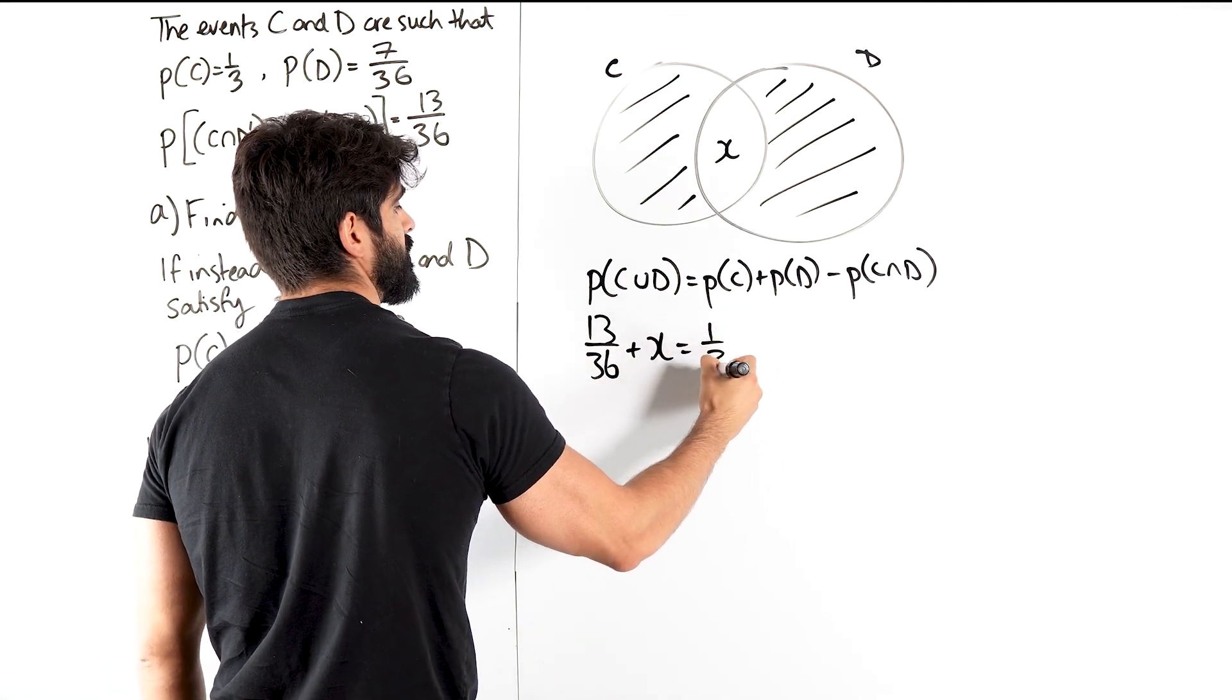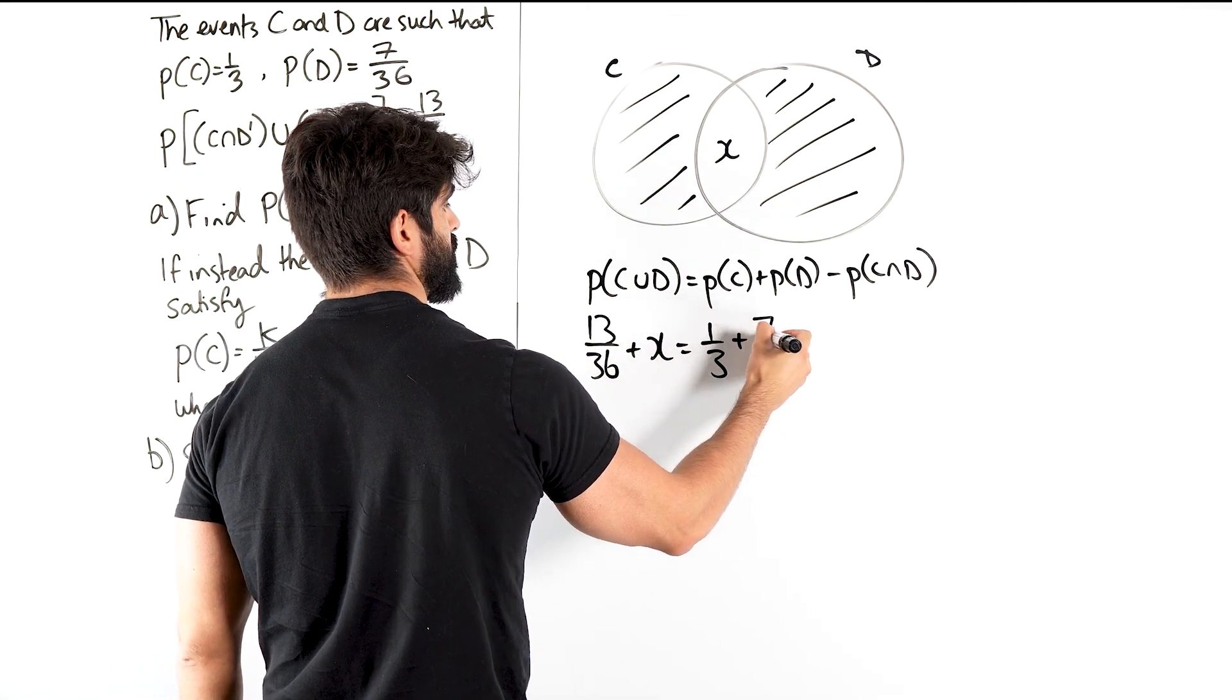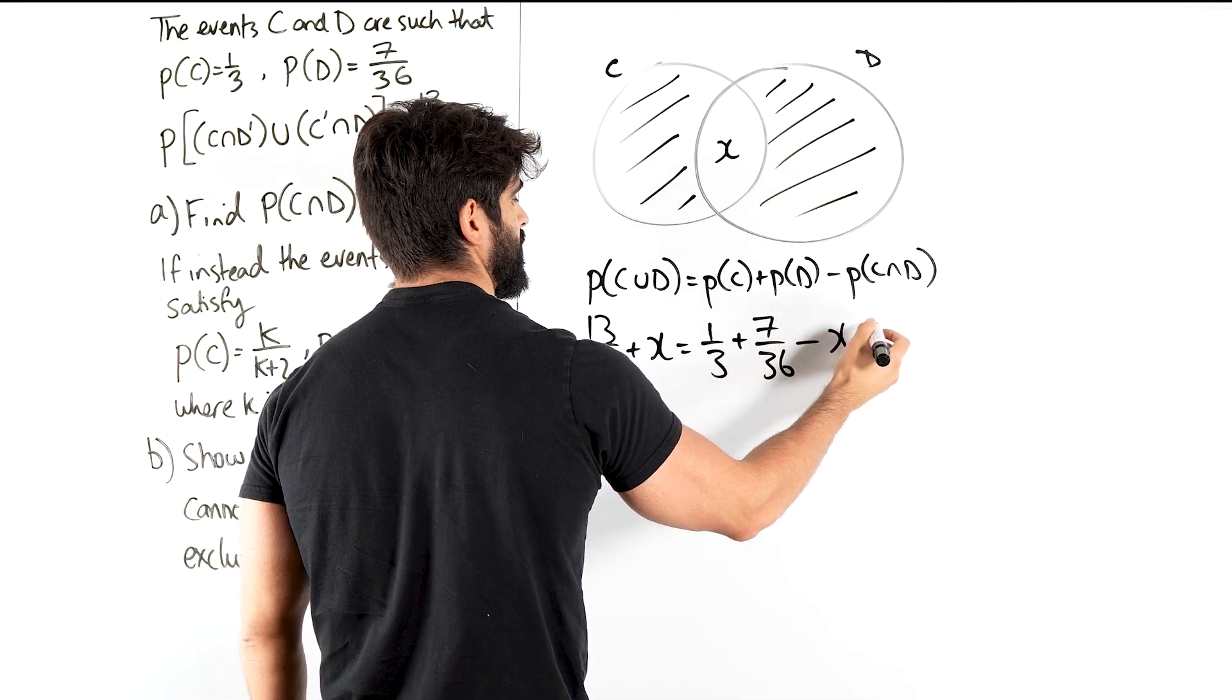Is the probability of C, which is a third, and the probability of D, which is 7 over 36. We just subtract the intersection, then we rearrange. Bring that here.